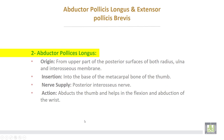The second muscle is abductor pollicis longus. It takes origin from the upper part of the posterior surface of both radius and ulna, and the interosseous membrane between them. Insertion into the base of the metacarpal bone of the thumb. Nerve supply from the posterior interosseous nerve. Action: abducts the thumb and helps in flexion and abduction of the wrist.